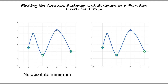Similar to finding the absolute maximum, if a hole is present but is not at the lowest point of the function, the absolute minimum will be at the lowest coordinate. So because the hole is now at x equals 5 instead of at its lowest coordinate, negative 1 and negative 3, the absolute minimum is at x equals negative 1, right? Exactly, you've got it.